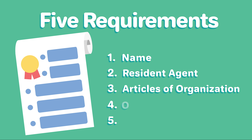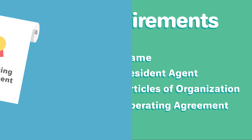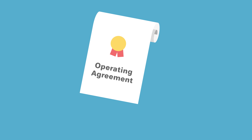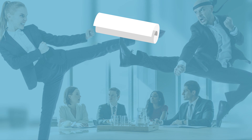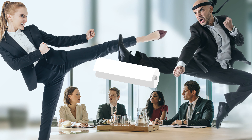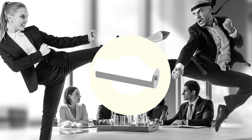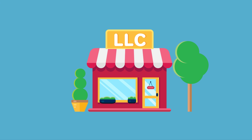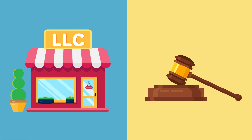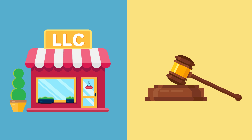Four, create an operating agreement. You should also create an operating agreement to establish ownership terms, member roles, and operating procedures. This legal document ensures that all business owners are on the same page and reduces the risk of future conflict. A comprehensive operating agreement will further establish your LLC as a separate legal entity. However, it does not need to be filed with the state.